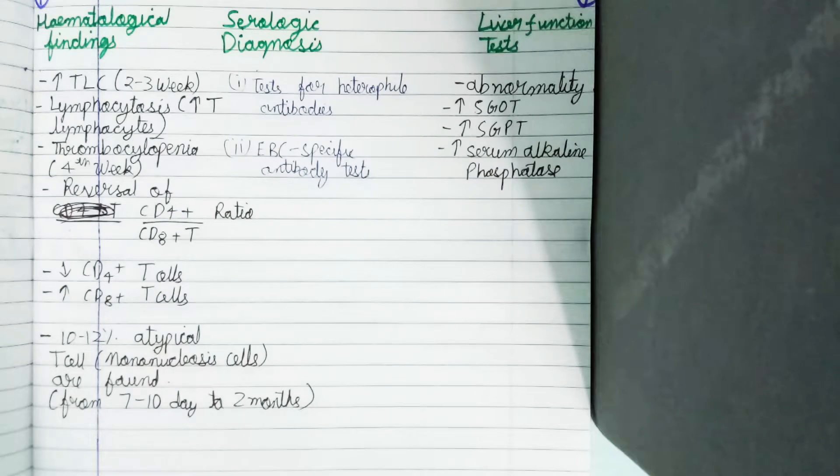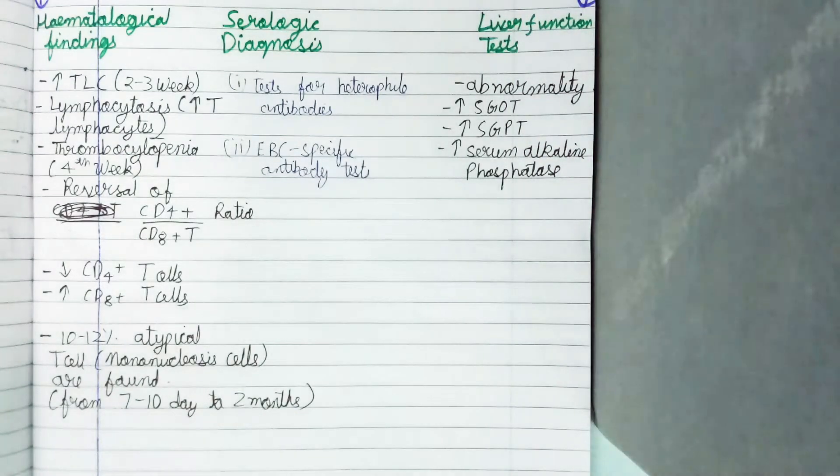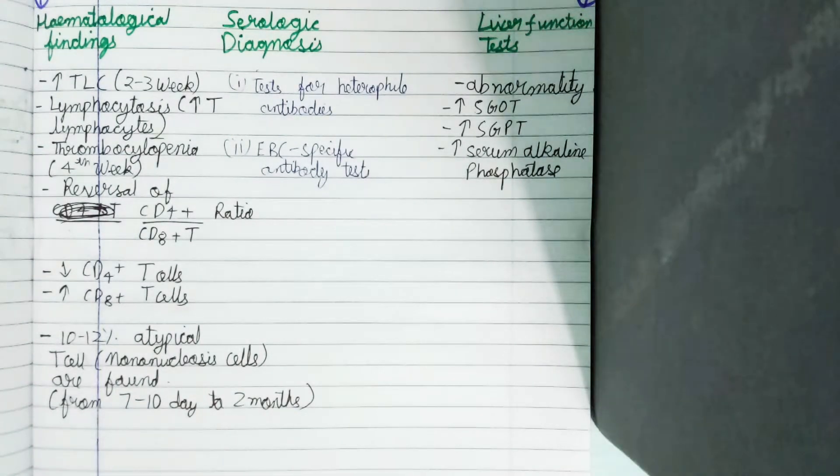This ratio is important for providing immunity. Here it mainly occurs due to decrease in CD4+ T cells and increase in CD8+ T cells, so the ratio gets reversed. Finally, 10 to 12% atypical mononuclear cells (CD8 cells) are found, maximum from the seventh to tenth day, and they persist up to two months.